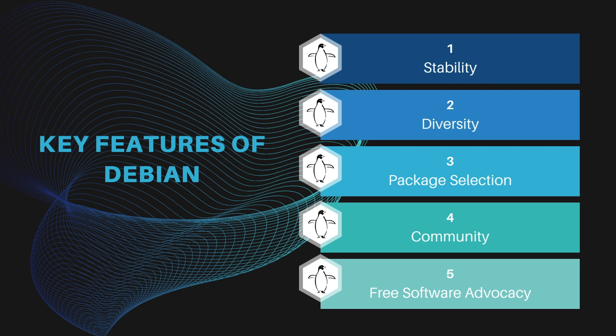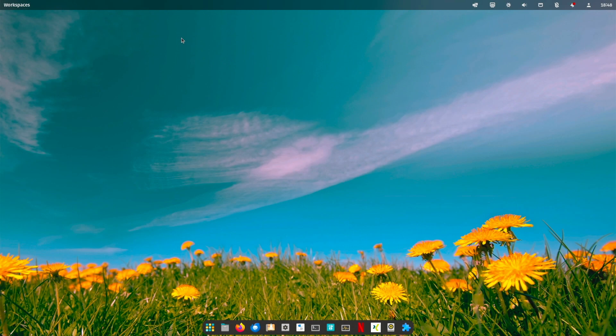Community: Debian thrives through its vibrant community comprising developers, users and advocates united in a passion for free software. The Debian community plays a pivotal role in shaping and maintaining the distribution. Free software: Debian's unwavering commitment to free software is integrated in its core. All software in its main repository adheres to the Debian Free Software Guidelines, fostering a culture of openness and collaboration.